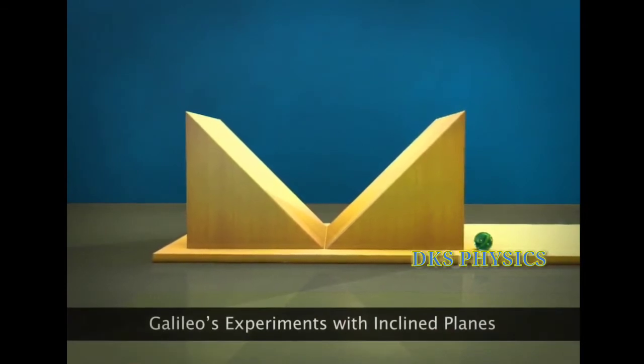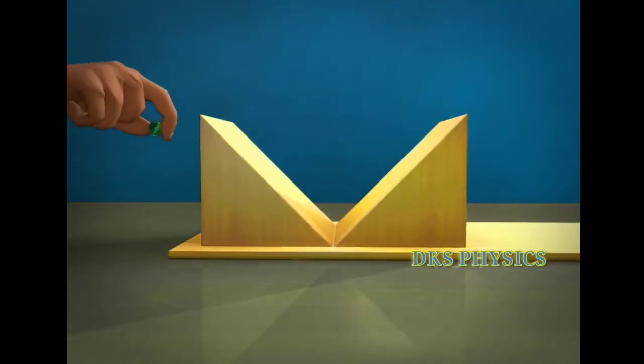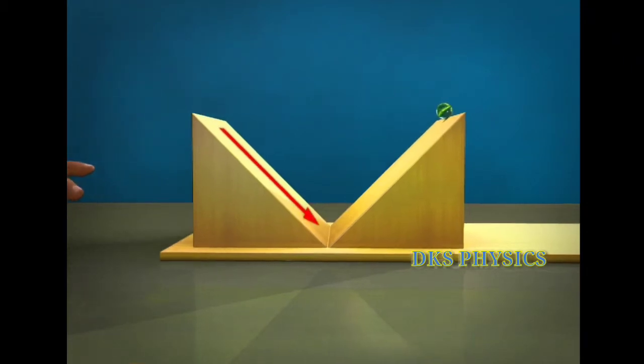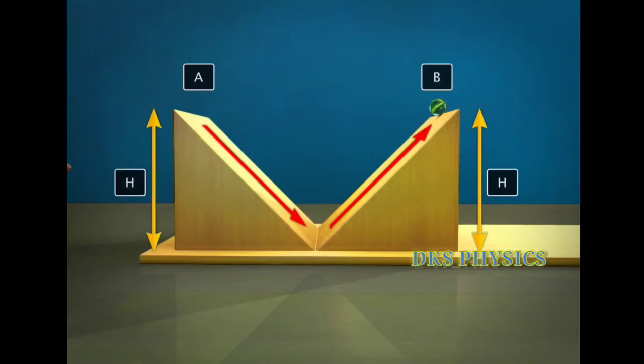Let's take a look at Galileo's experiments with inclined planes. Consider a marble resting on a plane inclined on both sides. Now the marble is released from the left, that is, end A. The marble rolls down the slope and travels up the other slope till it reaches the same height from which it was released.